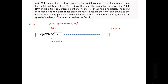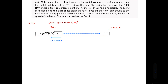This is our second problem under the principle of conservation of energy. The problem states that you have a 0.150 kilogram block of ice placed against a compressed spring mounted on a horizontal tabletop that is 1.20 meters above the floor. The spring has a force constant of 1900 newtons per meter and is initially compressed to 0.045 meters. The mass of the spring is negligible. The spring is released and the block slides along the table, goes off the edge, and travels to the floor. There is negligible friction between the block of ice and the tabletop. What is the speed of the block of ice when it reaches the floor?